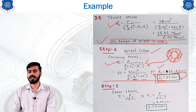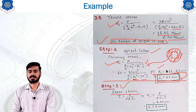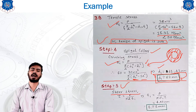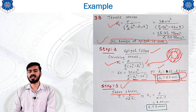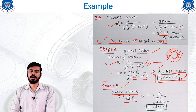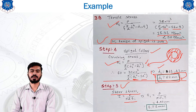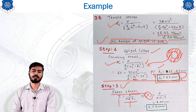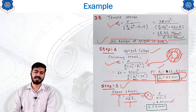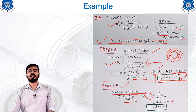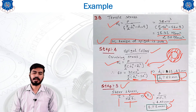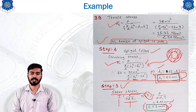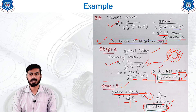Step 5 is the shear stress calculation. The shear stress equation is τ = P / (π · d1 · t1). We have the values of d1, τ, and P, so making t1 the subject gives t1 = 4.87 mm, rounded to 5 mm. Step 5 is now complete.